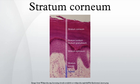Desquamation, the process of cell-shedding from the surface of the stratum corneum, balances proliferating keratinocytes that form in the stratum basale. These cells migrate through the epidermis towards the surface in a journey that takes approximately 14 days.